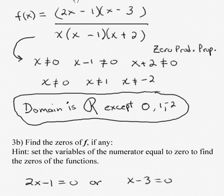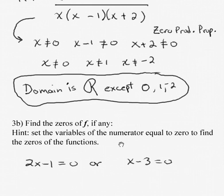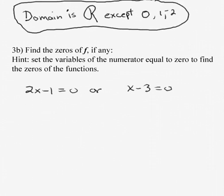So to find the zeros, we're going to take the factors of the numerator. 2x minus 1, set that equal to 0. x minus 3, set that equal to 0. Solve each of those equations. So 2x is equal to 1. Divide both sides by 2, x is equal to 1 half.